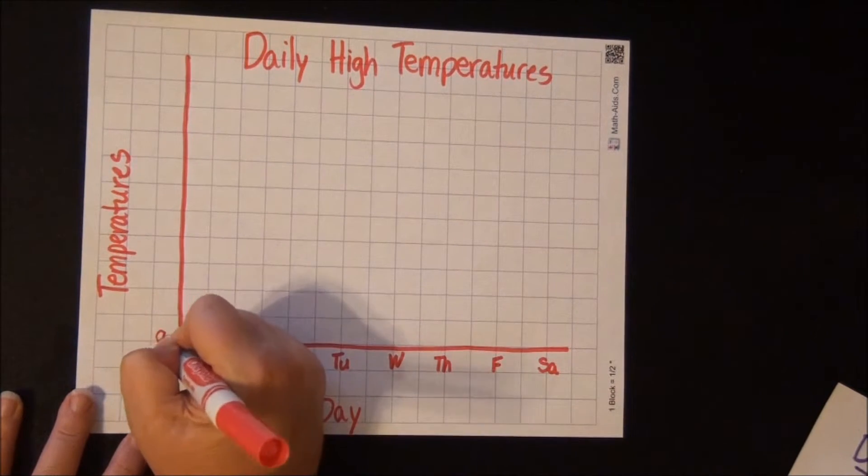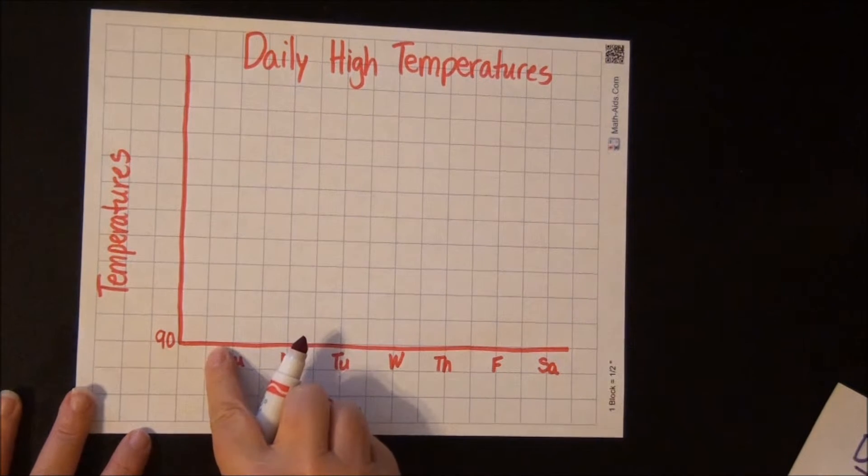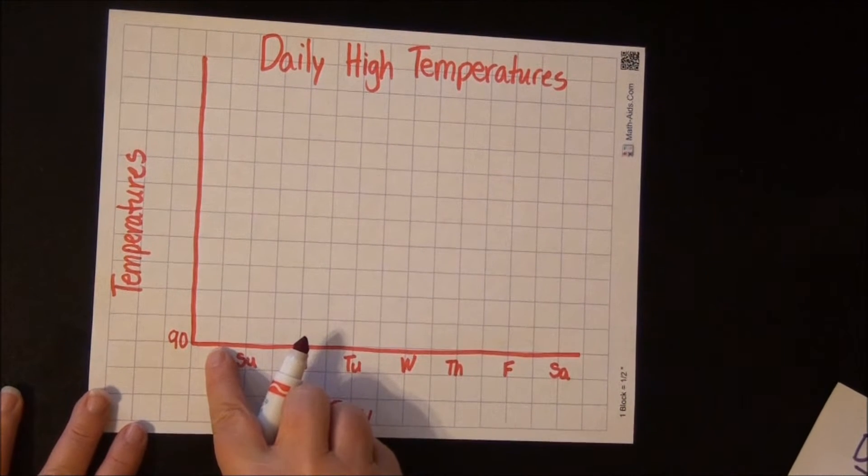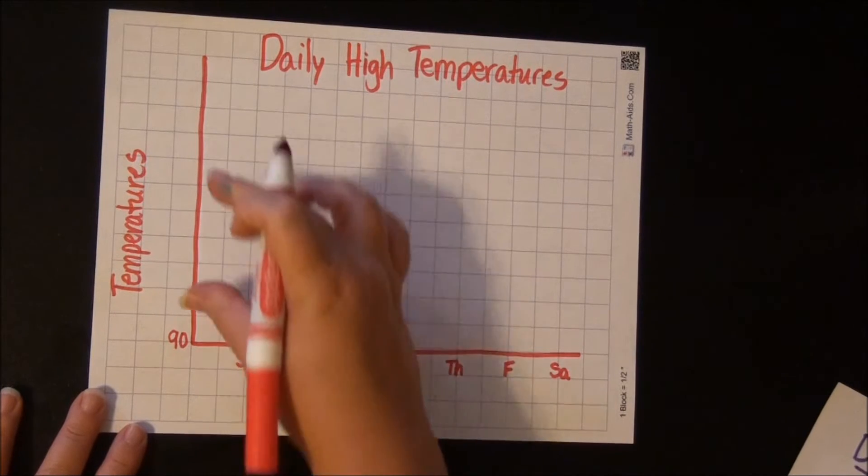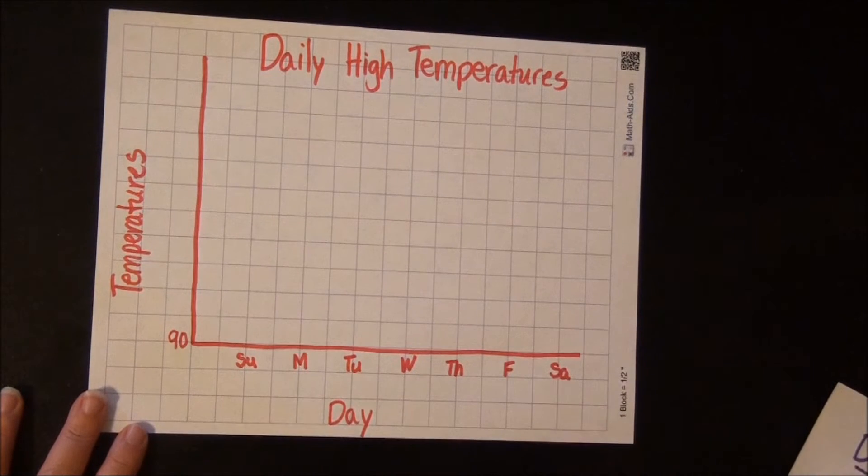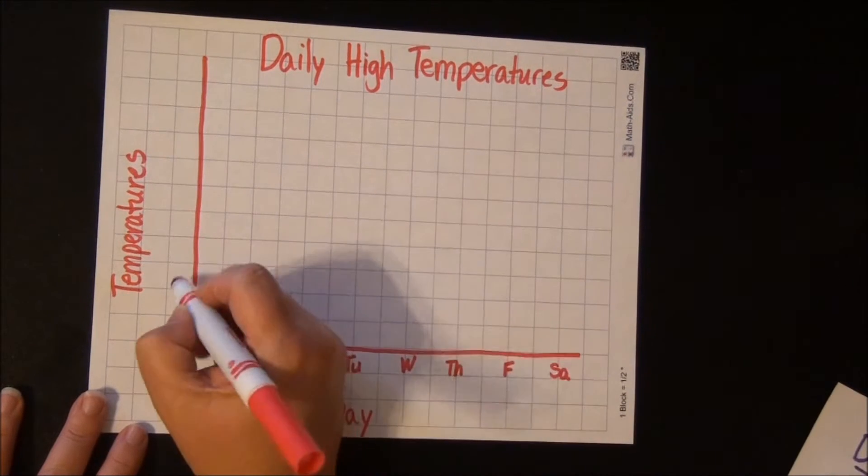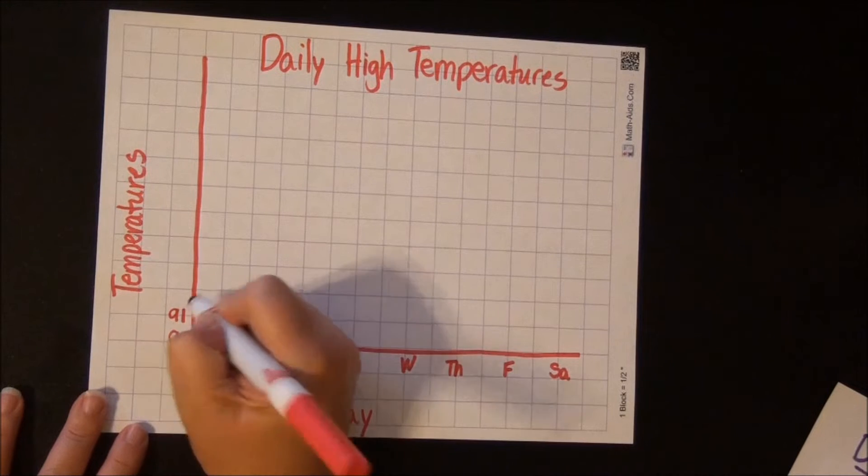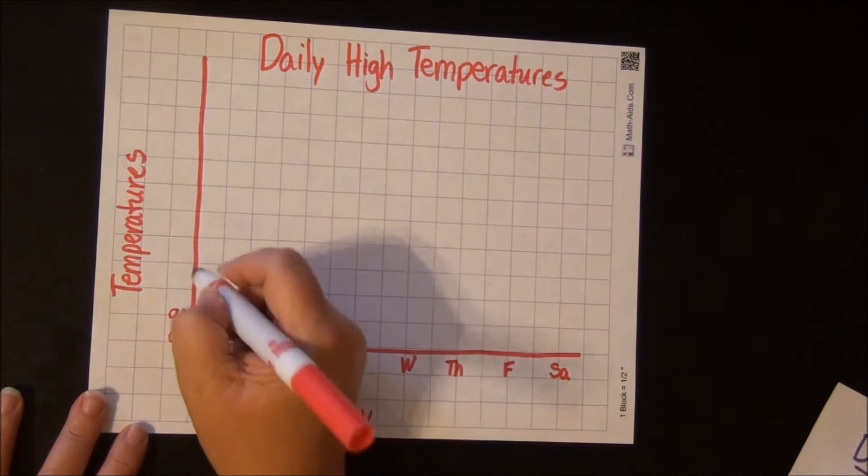So I'm going to put 90 down here on the very bottom line. Now on most of your graphs, this started out at 0. But we don't need to go 0 to 100, because our line would be really small and be squished way up here. We want to really see the temperature going up and down. So we're going to put 91 here. Notice I'm doing it on the line, not in the space.